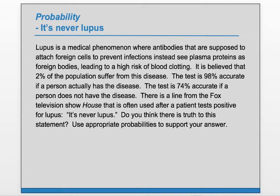Lupus is a medical phenomenon where antibodies that are supposed to attach foreign cells to prevent infections instead see plasma proteins as foreign bodies, leading to a high risk of blood clotting. It is believed that 2% of the population suffer from this disease. The test is 98% accurate if a person actually has the disease, and 74% accurate if a person does not have the disease. There's a line from the Fox television show House that is often used after a patient tests positive for lupus: 'It's never lupus.' Do you think there is truth to this statement? Use appropriate probabilities to support your answer.